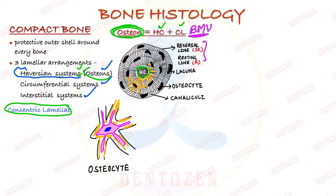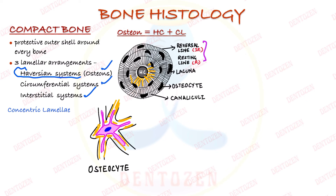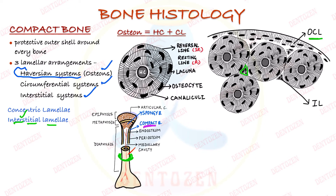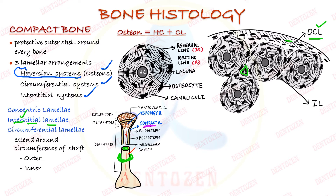Within compact bone there are many such concentric lamellae. In between them you can see interstitial lamellae — inter meaning in between — which are remnants of osteons that have been remodeled by osteoclast cells. Surrounding the entire circumference of the bone are circumferential lamellae arranged in parallel. Those on the outside are called outer circumferential lamellae, and those on the inside facing the medullary cavity are called inner circumferential lamellae.